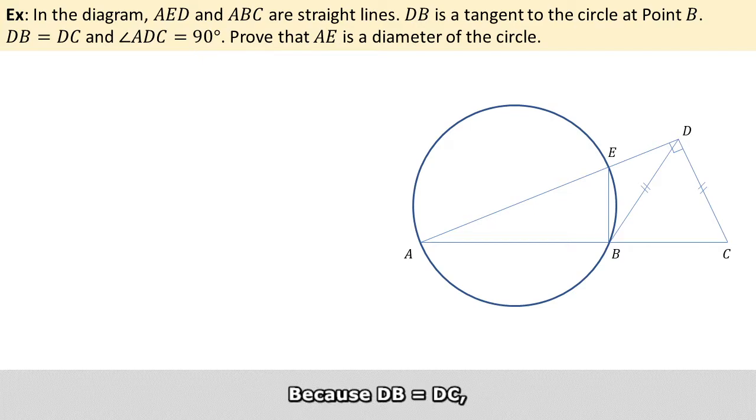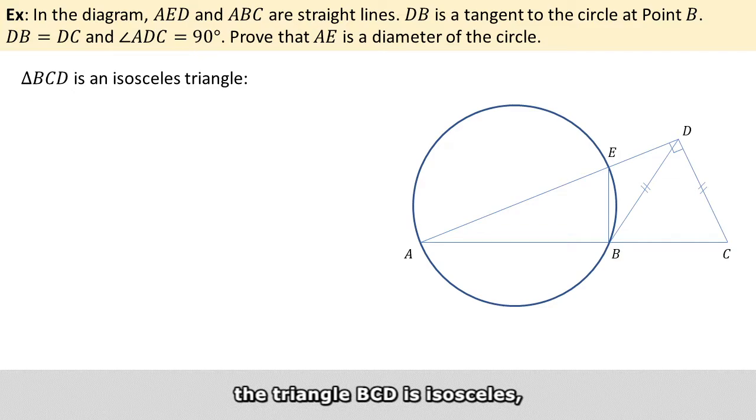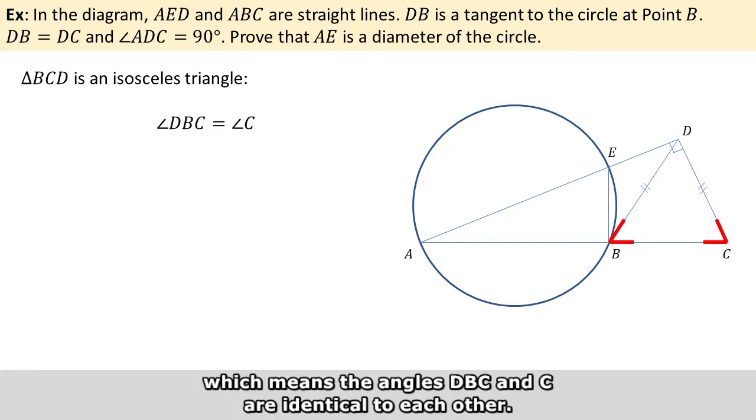Because DB equals DC, the triangle BCD is isosceles, which means the angle DBC and the angle C are identical to each other.